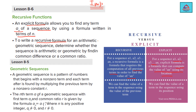In a recursive formula, we find the value of a term using the value of the previous term. In an explicit formula, we find the value of the term using its position — using the formula directly, without needing the previous term. We also need to know what a geometric sequence is, since we are going to use this concept to solve some questions.